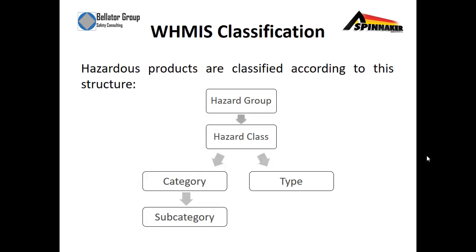WHMIS Classification. Hazardous products are classified into the following structures: first, we begin with the hazard group, moving into a hazard class, and then this is further broken down to a category or type, or if in a category, further broken down to a subcategory.